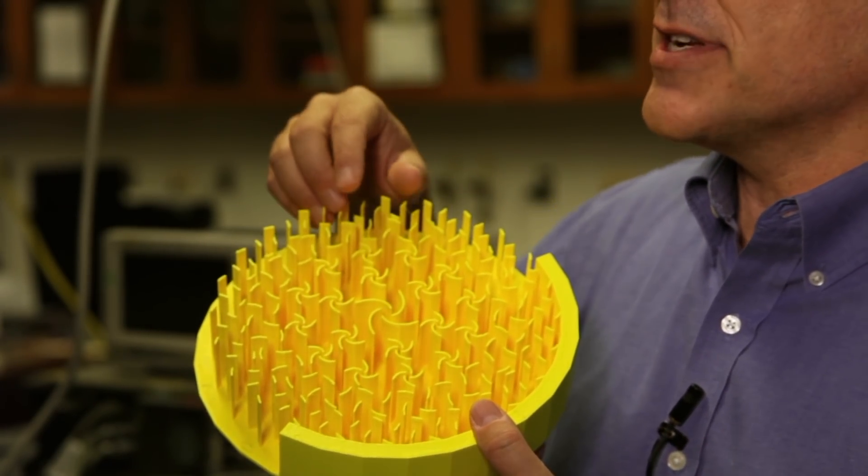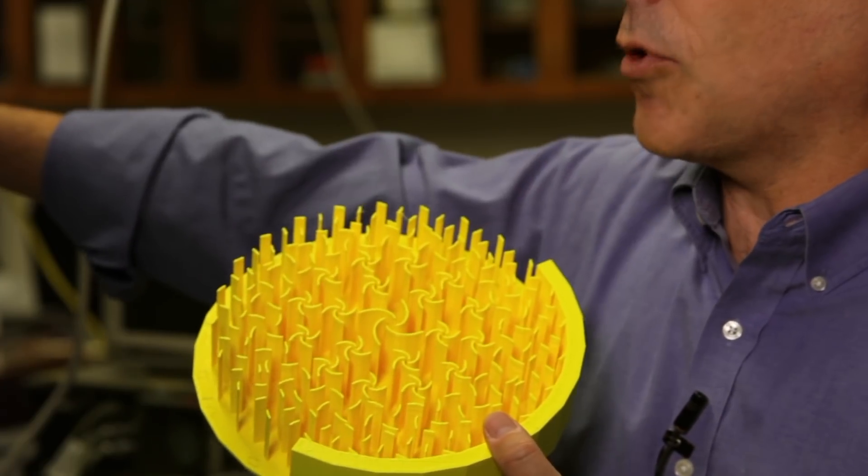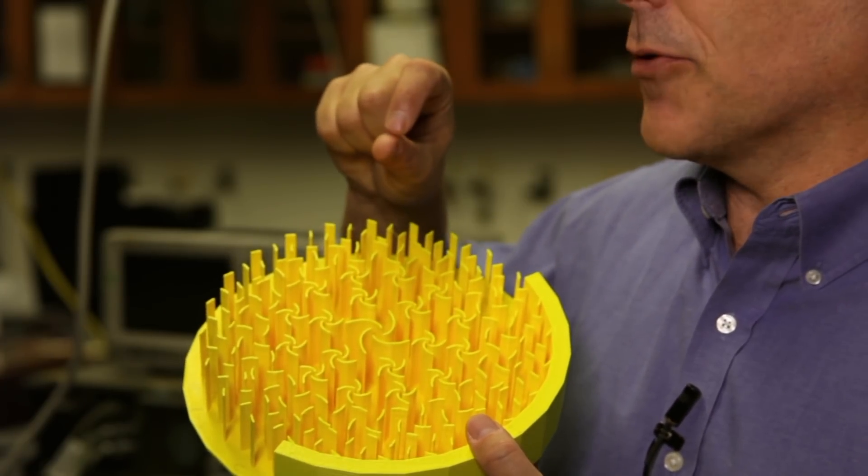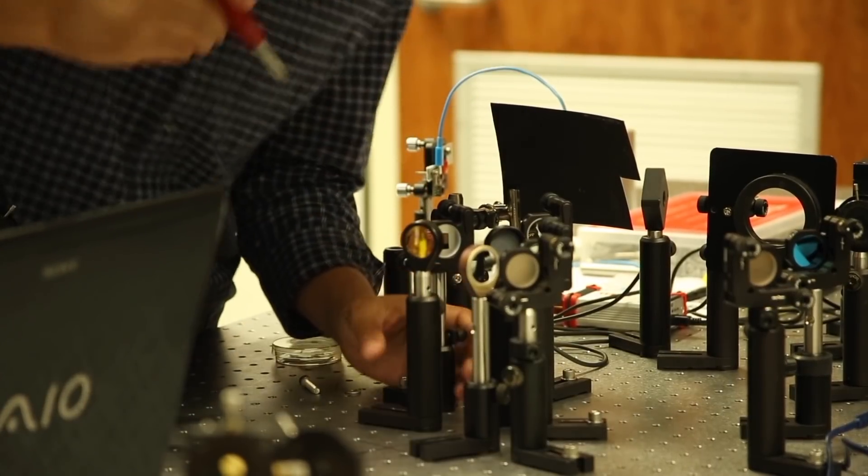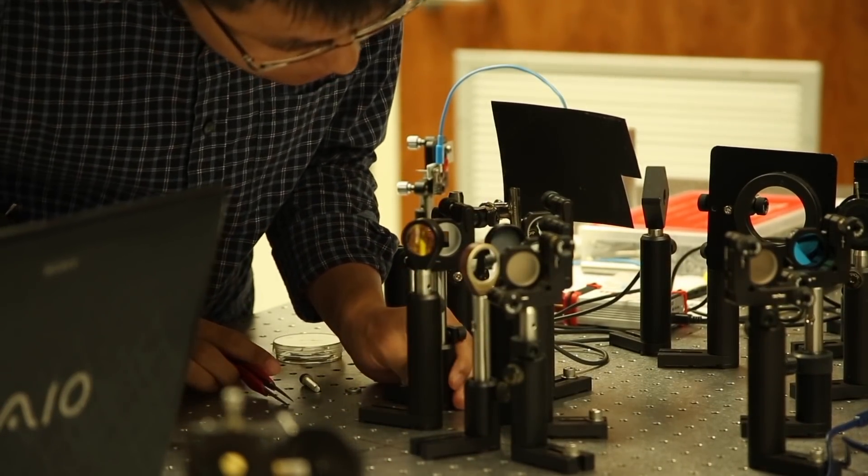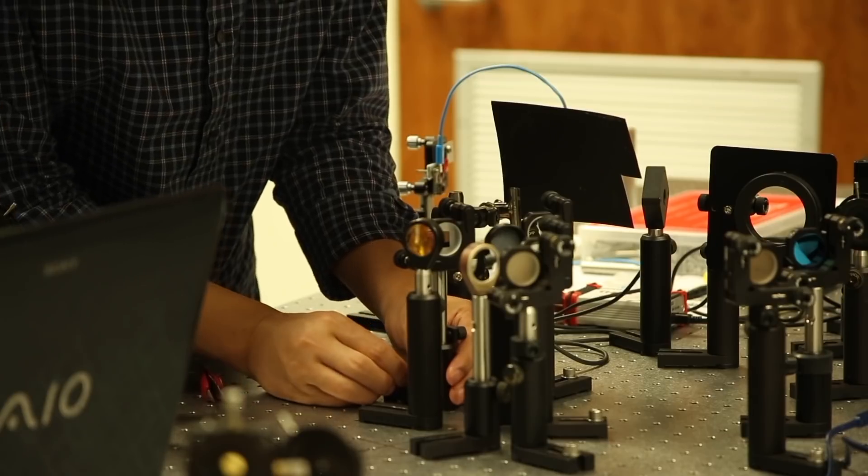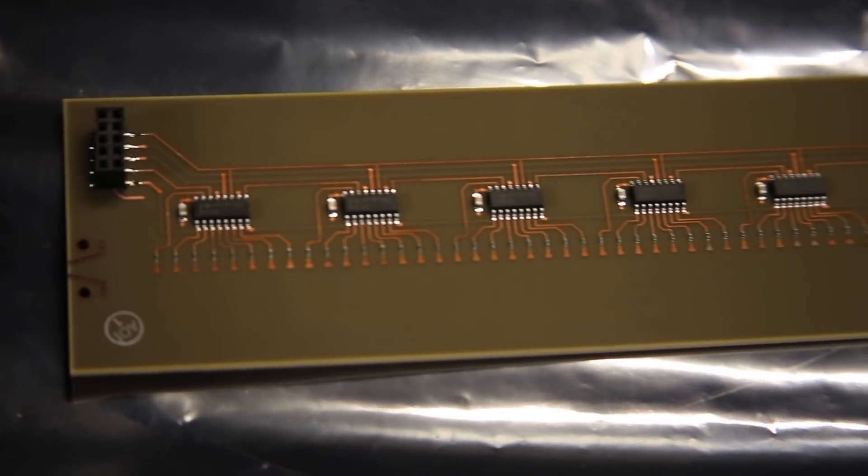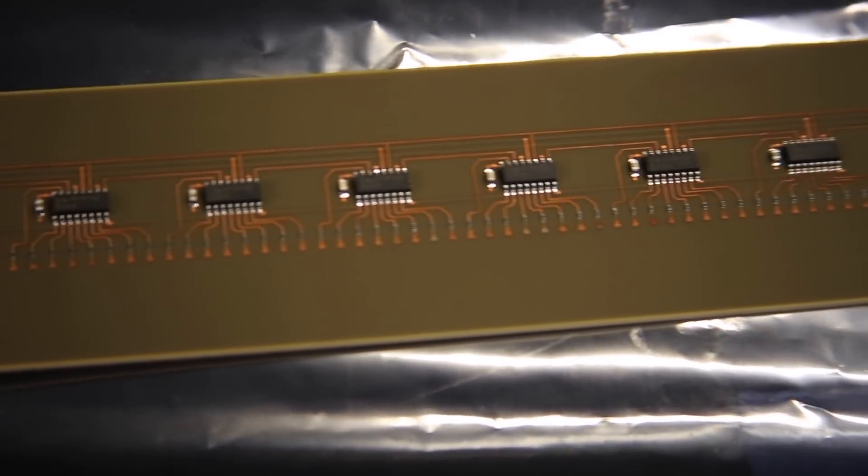That wave could be light, could be sound, could be radio waves, but the fundamental idea is that you design a structure, and that structure mimics natural materials and can then be used to control wave propagation.